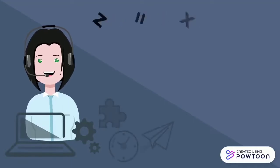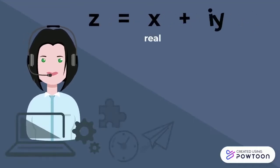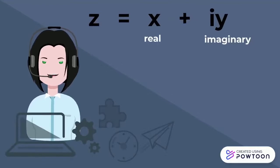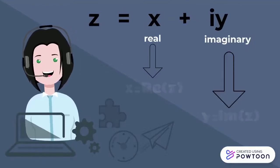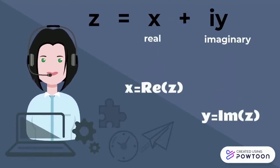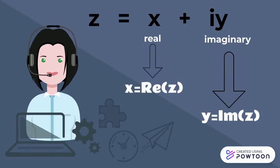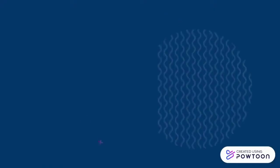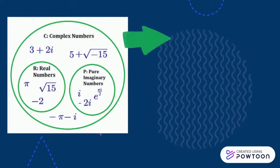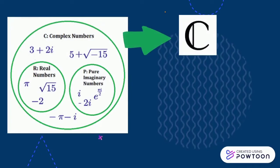x and y are referred to as the real part and the imaginary part of z respectively. It is denoted as x is equal to the real part of z, and y is equal to the imaginary part of z. Also, the set of complex numbers can be denoted by C, the symbol of complex numbers.